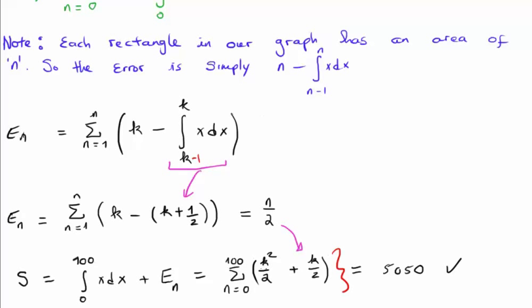We see that 100 squared is 10,000 divided by 2 is 5,000. And we need to add to that 100 divided by 2 is 50, which gives us 5,050 as expected. So this procedure of doing the integral and adding the error term was successful.